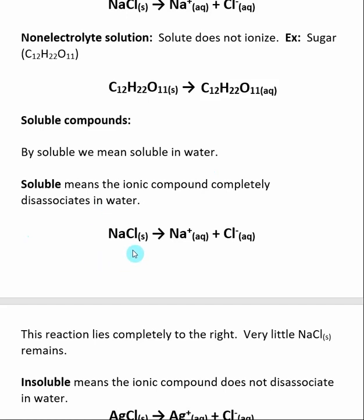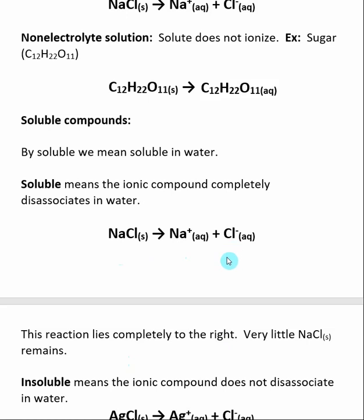NaCl is a classic example of a soluble compound. Soluble means that if we put NaCl in water, the dissociation into the corresponding ions lies completely to the right. That means in an unsaturated solution, very little NaCl solid will be present. Na⁺ and Cl⁻ will be present instead — when we add NaCl solid, almost all of it dissociates completely into the ionic forms.